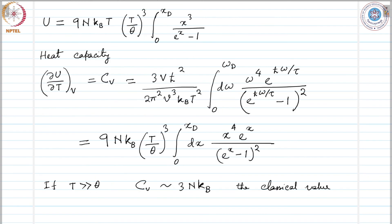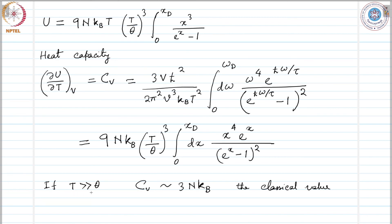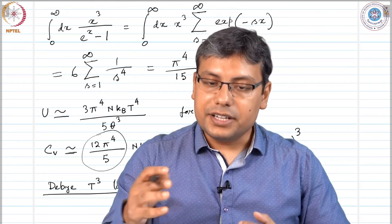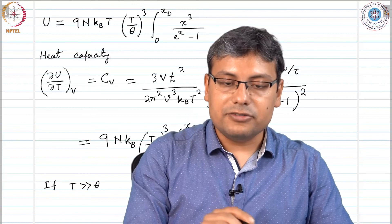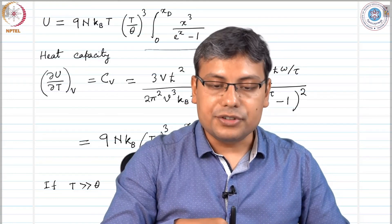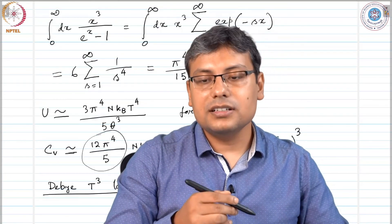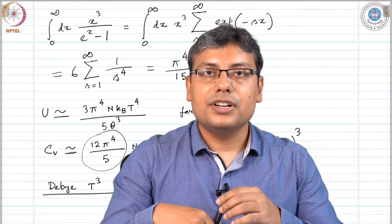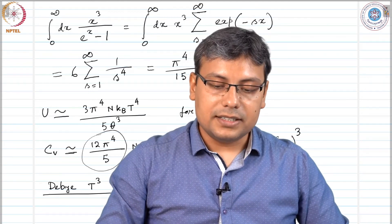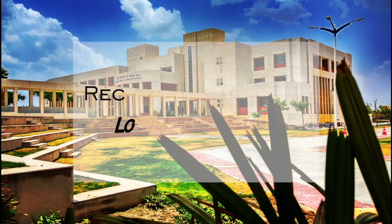We have evaluated two limits: in one limit, temperature much larger than the Debye temperature, C_V became a constant and approached the classical value 3 N k_B. When temperature is very low, C_V goes as temperature cubed. For intermediate temperature we must explicitly evaluate the integral to find U and then take the temperature derivative to find C_V, which is a more difficult task, but it gives a reasonable value of C_V that matches quite well with experiment. This is all about phonons that we wanted to discuss.